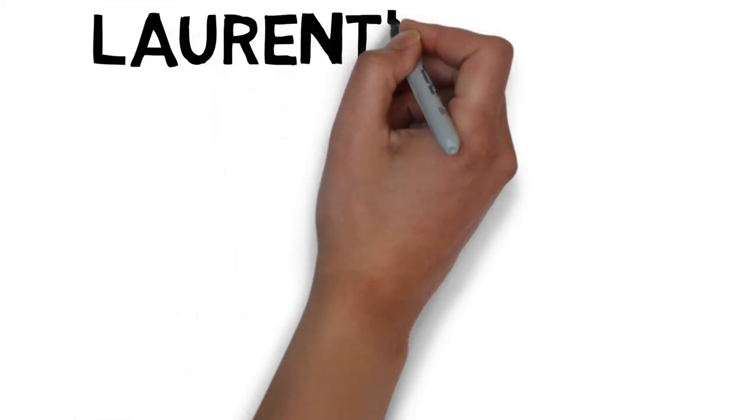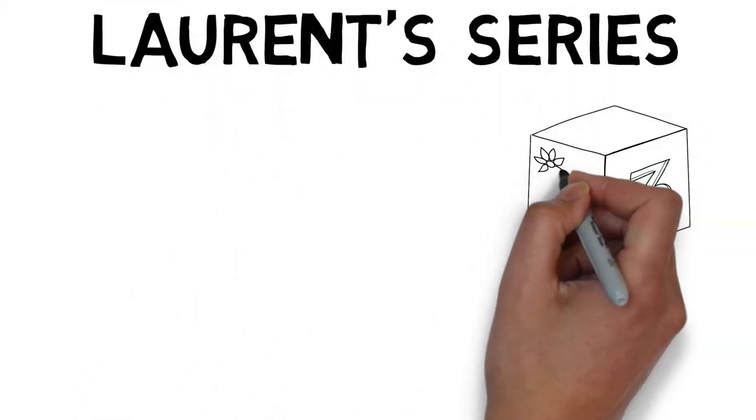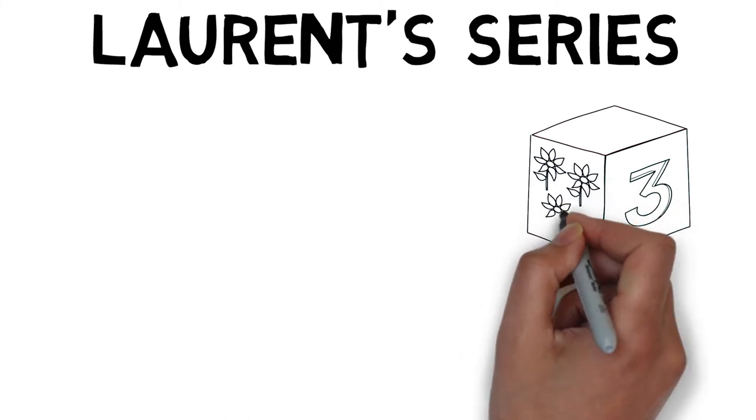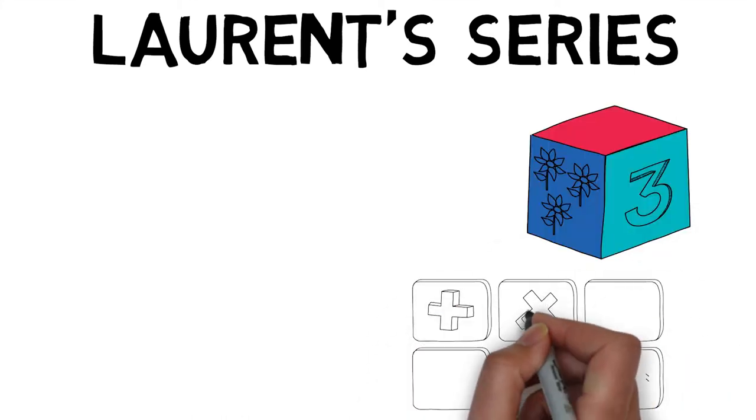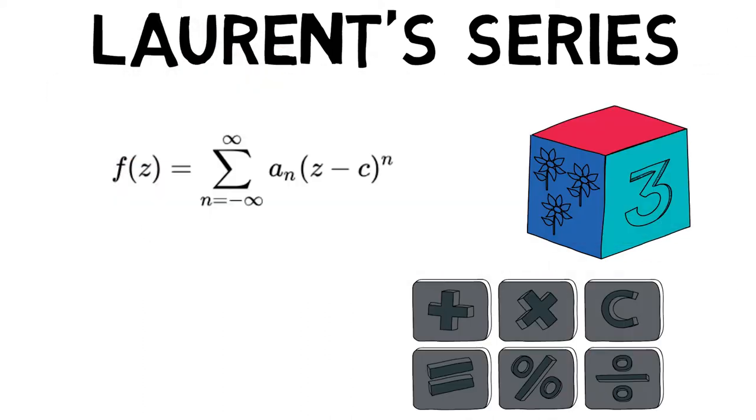The Lorentz series of a complex function f of z is a representation of that function as a power series which includes terms of negative degree. It may be used to express complex functions in cases where a Taylor series expansion cannot be applied. The Lorentz series for a complex function f of z about a point c is given by f of z equals to summation of a n into z minus c raised to n, from n equals to minus infinity to infinity, where a, n, and c are constants defined by a line integral which is a generalization of Cauchy's integral formula.